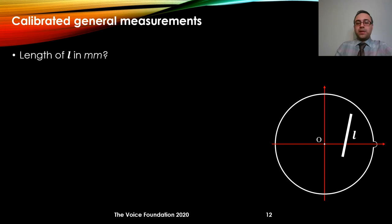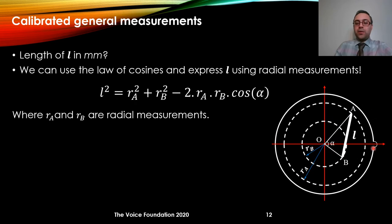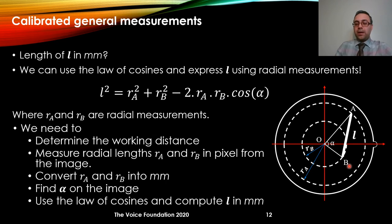In the previous slide, we saw how to measure lengths of an object where one end is at the center of the field of view. But how about a general object where neither end is at the center? Using principles of geometry and the law of cosines, we create an OAB triangle where OA equals RA and OB equals RB — lengths with one end at the center. We can convert OA and OB into millimeters using the previous method, and then use the law of cosines to estimate the length of L in millimeters.